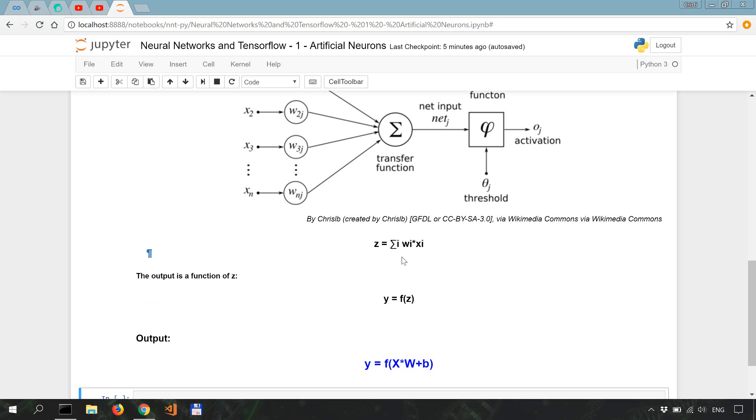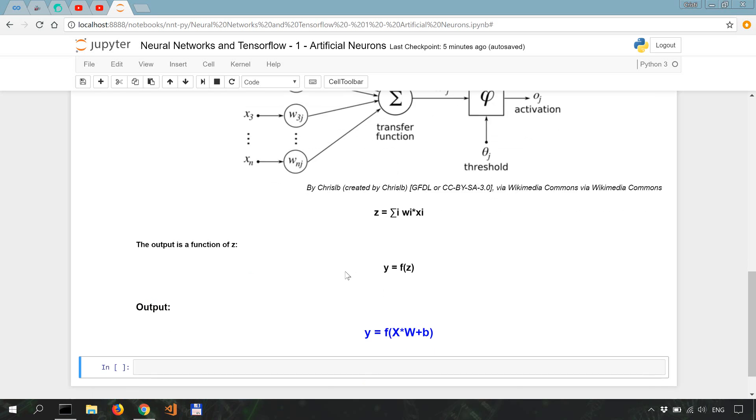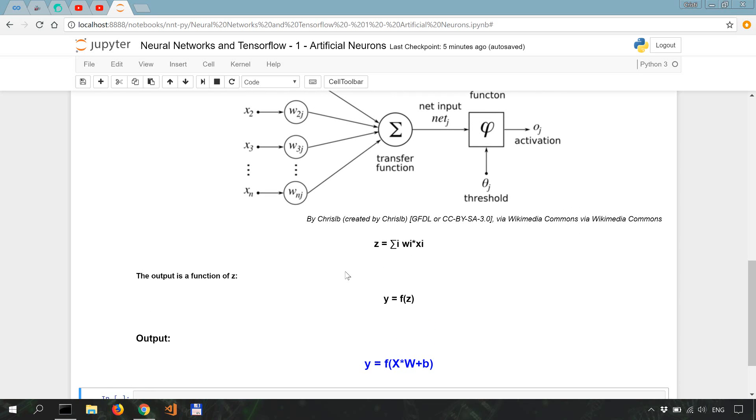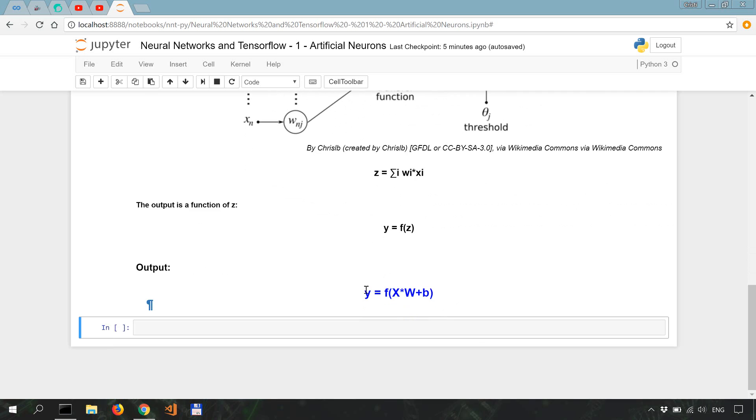This is probably one of the very basic explanations of artificial neurons. Now, because our input takes multiple values, we can view it, and we should view it, as a vector, because it's going to be more efficient in terms of computation. Likewise, the weights are also better written in vector form.